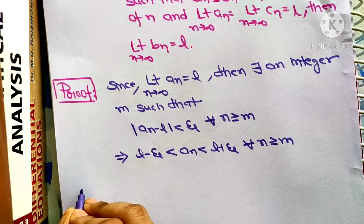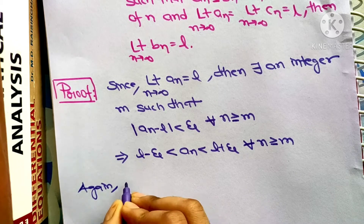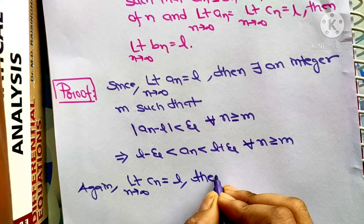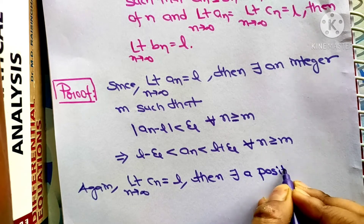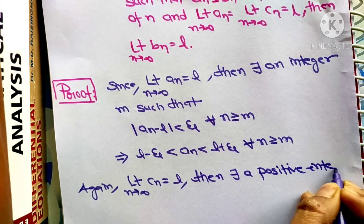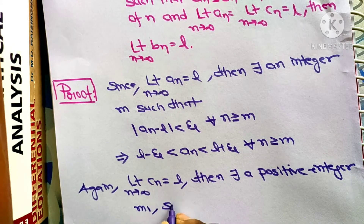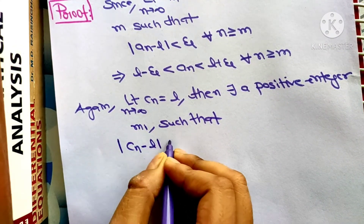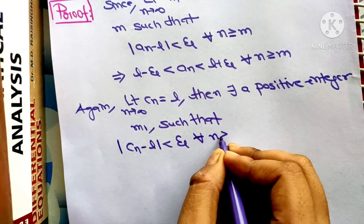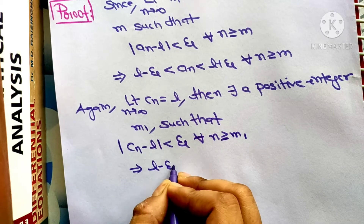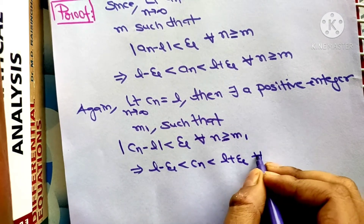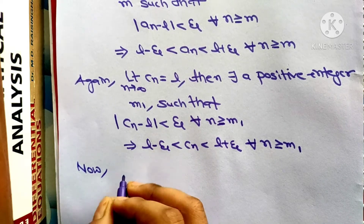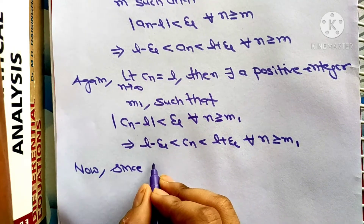Again, since the limit as n tends to infinity of cₙ equals l, there exists a positive integer m₁ such that |cₙ − l| < ε for all n ≥ m₁. This gives us l − ε < cₙ < l + ε for all n ≥ m₁.